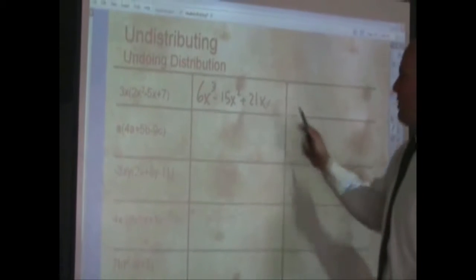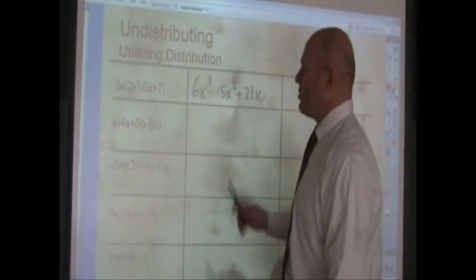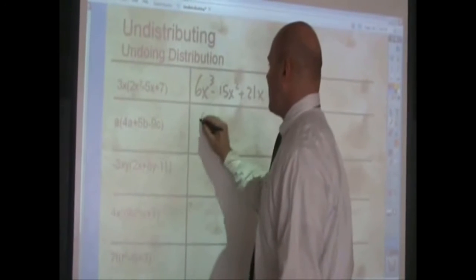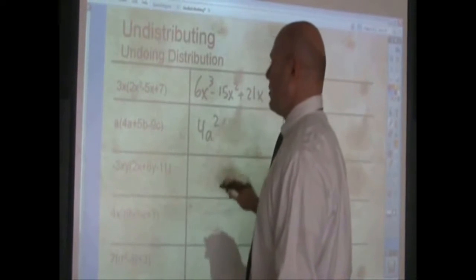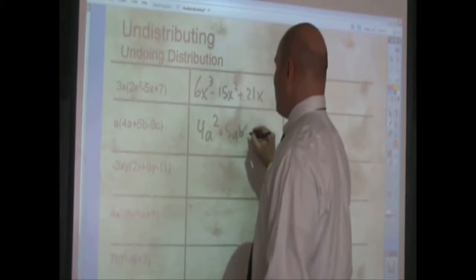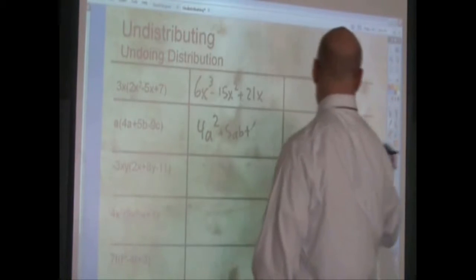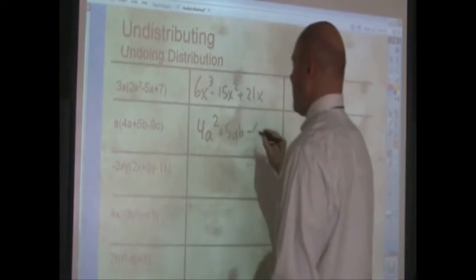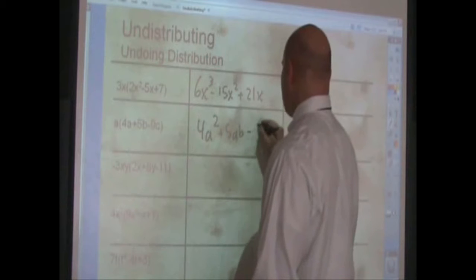I'm not going to check these, not this version of them right now, I'm just going to go through and do them. A times 4a plus 5b minus 9c makes 4a squared plus 5ab, minus 9ac.